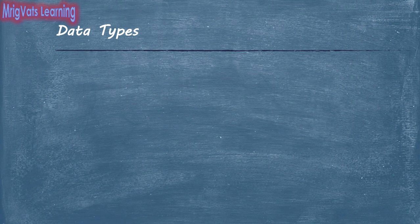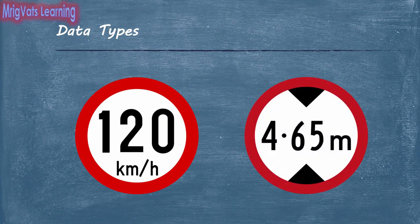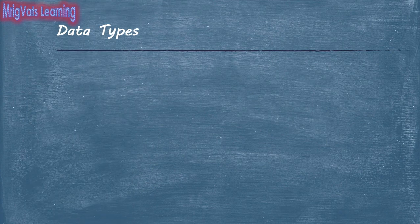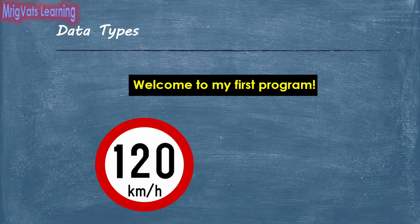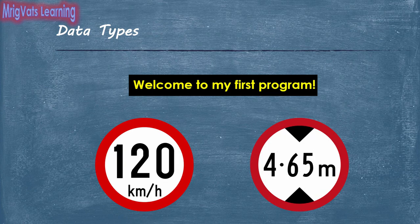Numeric data can further be integers or decimal points. Therefore, you can use variables of three data types in a program: text, integer, and decimals. These are the three fundamental data types used across programming languages, and each language has its own convention to refer to these data types. All other data types available in various programming languages are ideally derivatives of these data types.